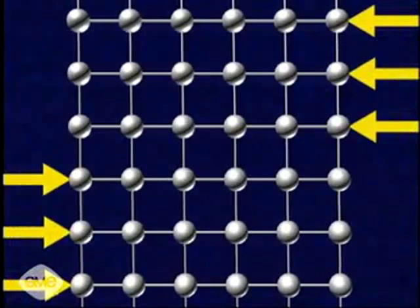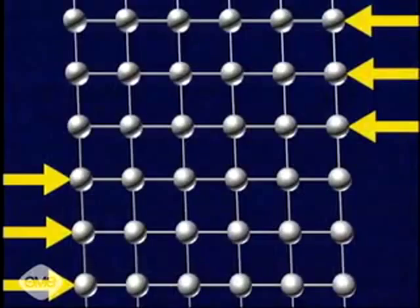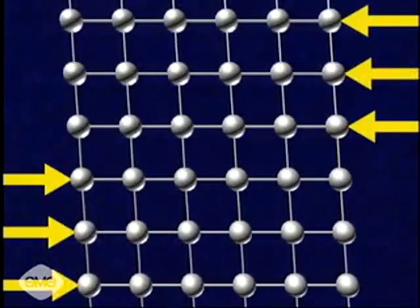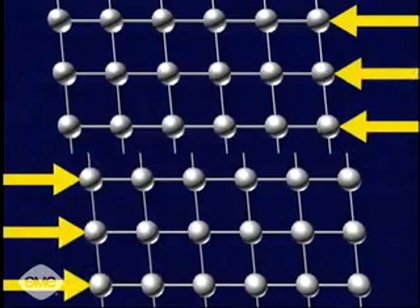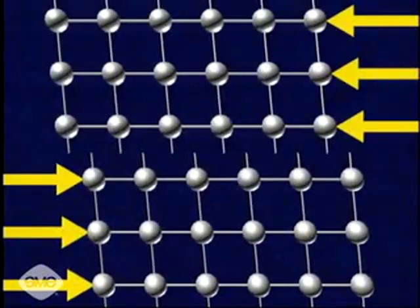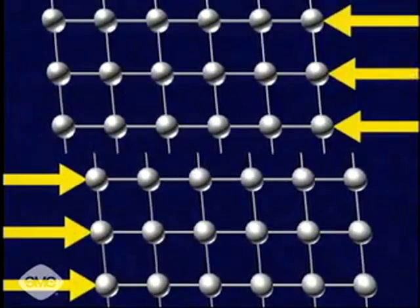If the applied force exceeds the metal's yield strength, those electromagnetic bonds will break, causing permanent stretching or deformation. To make metals stronger and more resistant to deformation, it's necessary to strengthen their crystal structures.